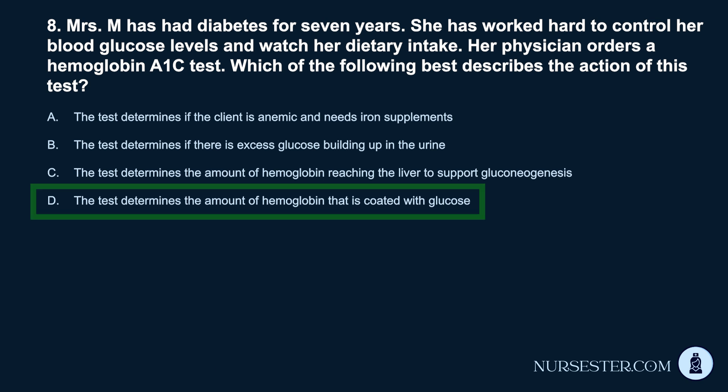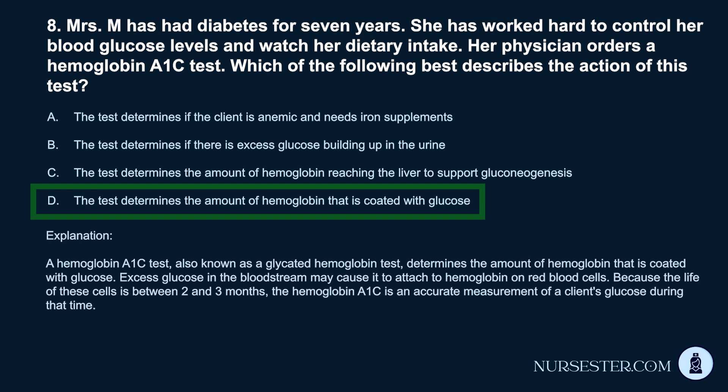Correct answer: D. The test determines the amount of hemoglobin that is coated with glucose. A hemoglobin A1c test, also known as a glycated hemoglobin test, determines the amount of hemoglobin that is coated with glucose. Excess glucose in the bloodstream may cause it to attach to hemoglobin on red blood cells. Because the life of these cells is between 2 and 3 months, the hemoglobin A1c is an accurate measurement of a client's glucose during that time.